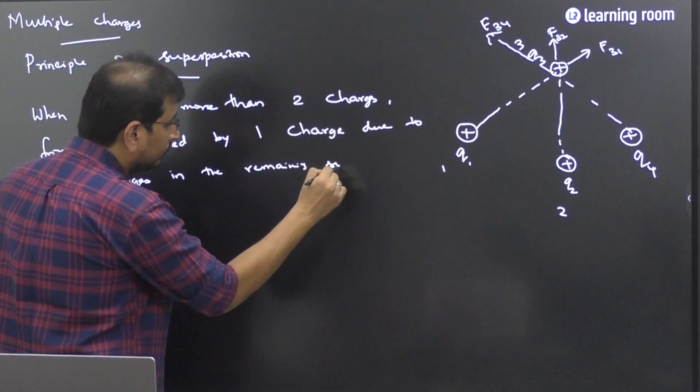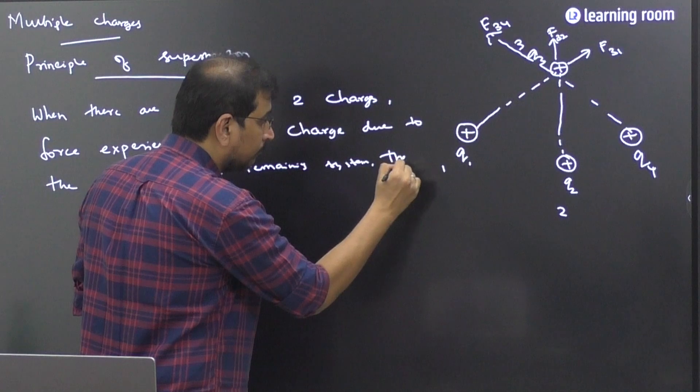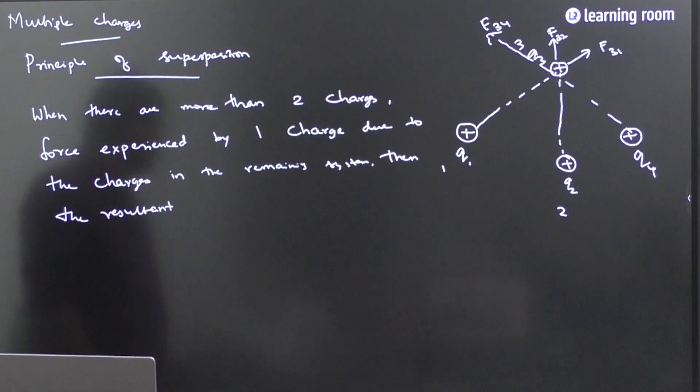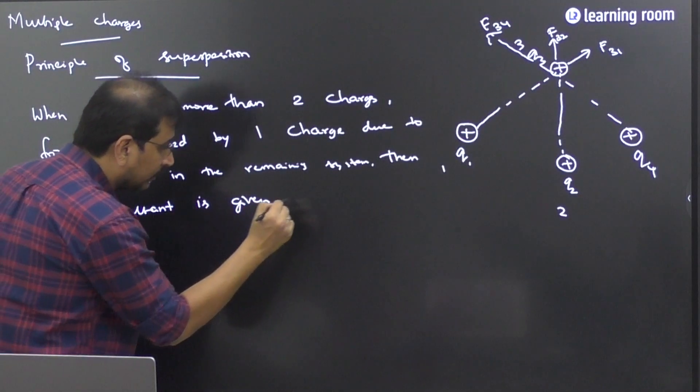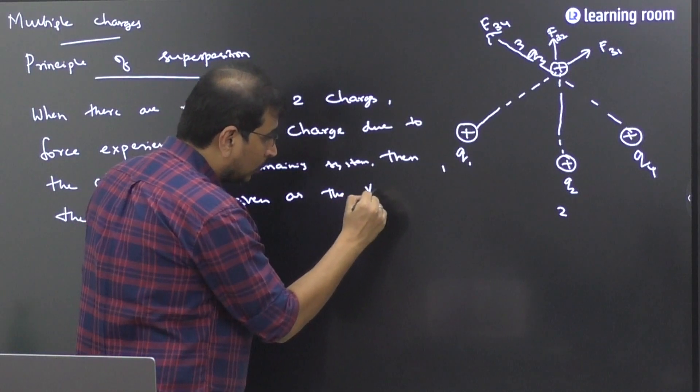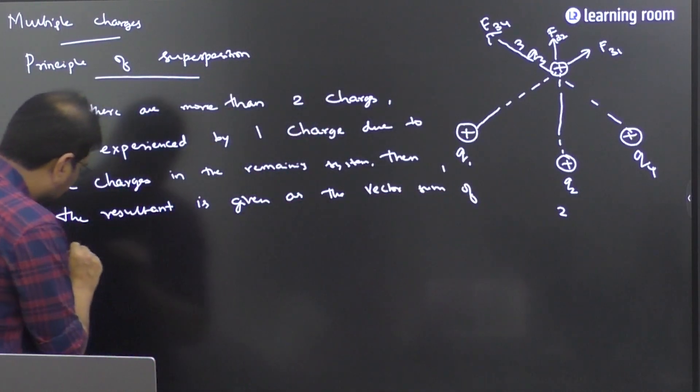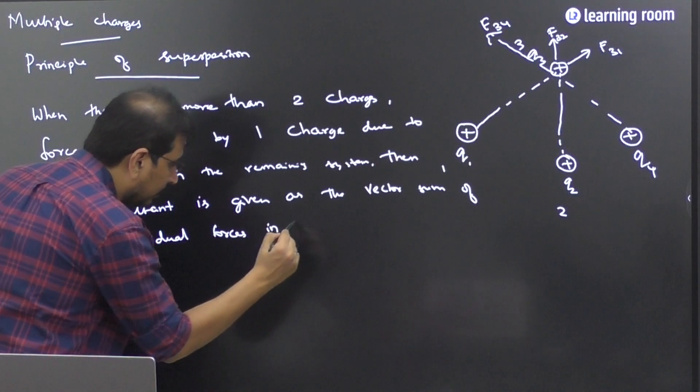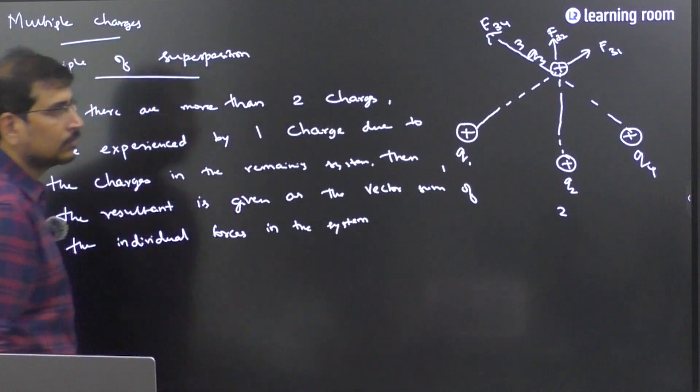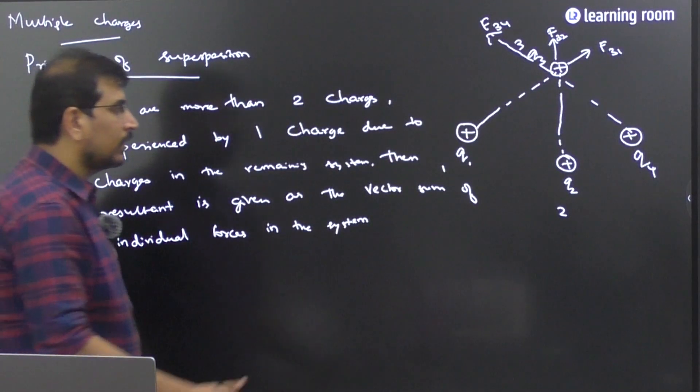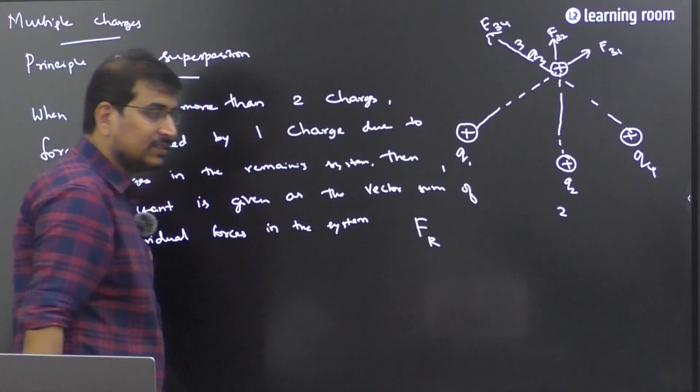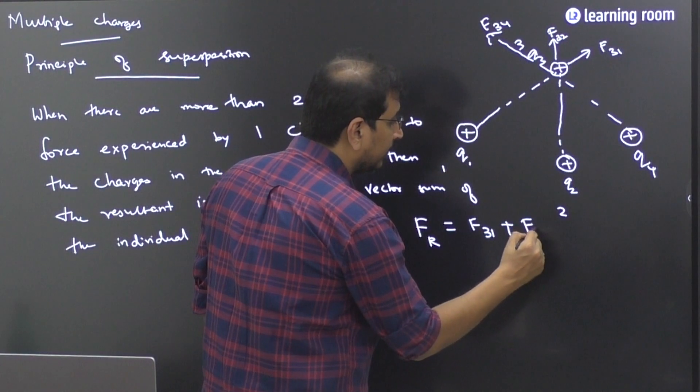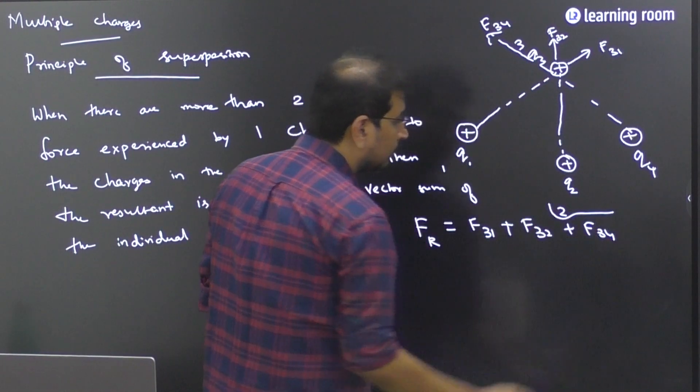Then what is given? The resultant is given as the vector sum of the individual forces in the system. So can I write it mathematically in this way? If R, where F to R is the resultant, is equal to whom? F31 plus F32 plus F34. Am I right?